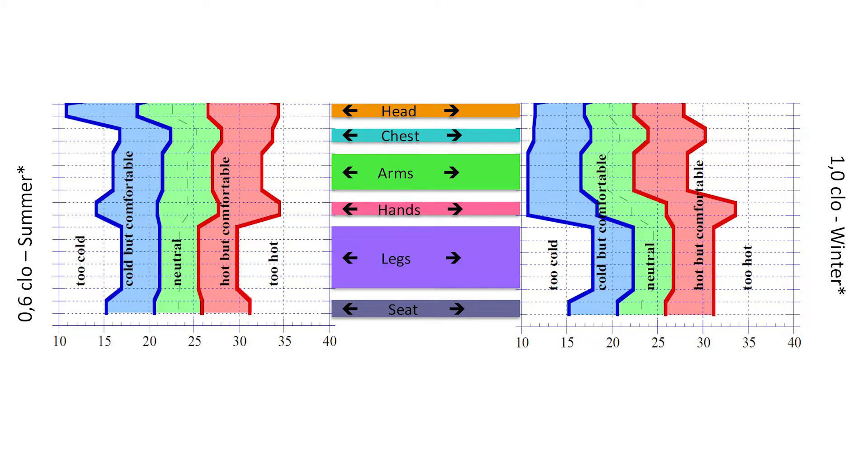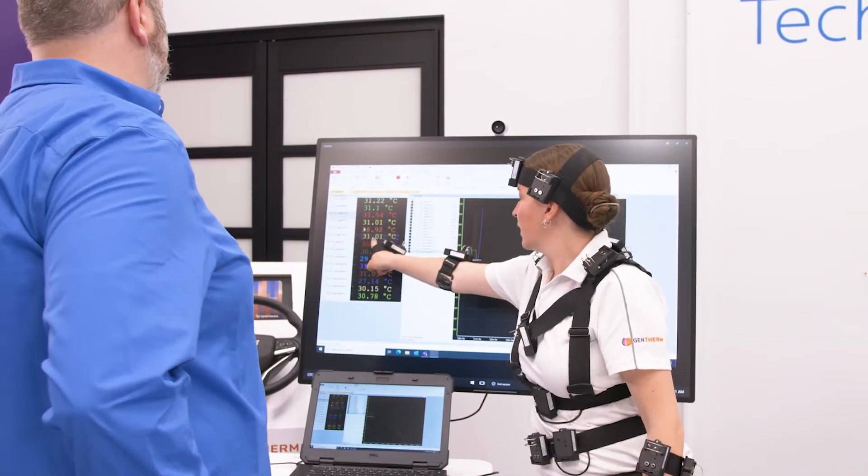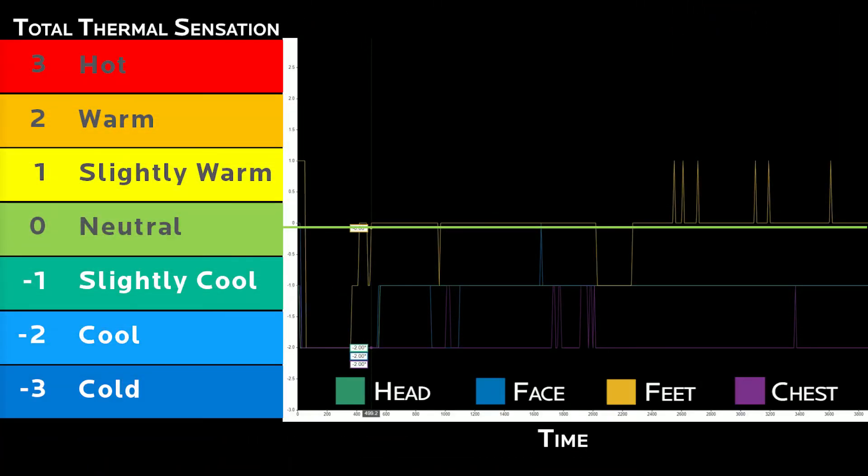We know from Nielsen's work on occupant comfort that each segment of the body will have slightly different ranges of temperatures that will feel comfortable. Our system and data acquisition software allows us to measure overall EHT and estimate thermal sensation and also local EHT and local sensation values.